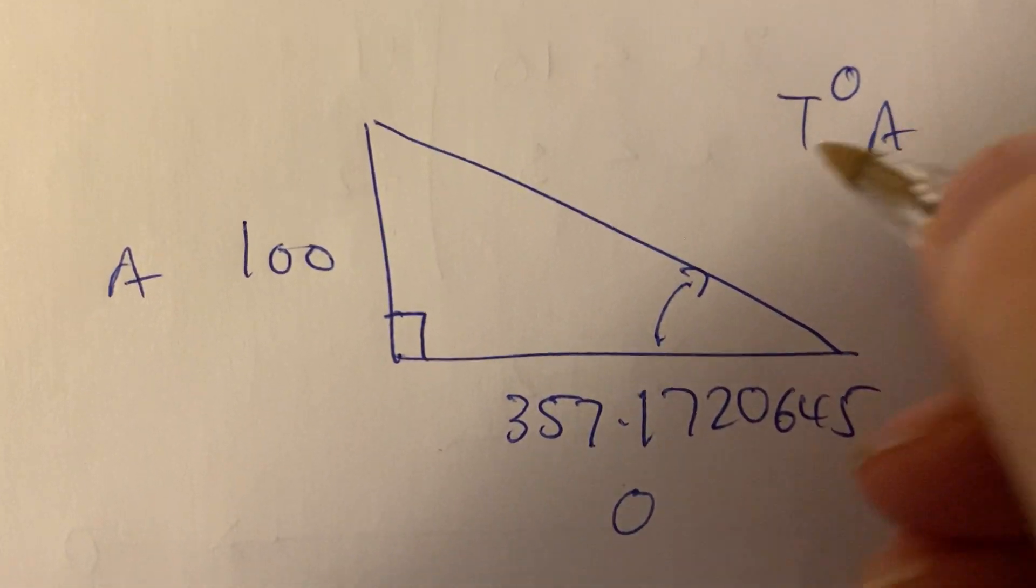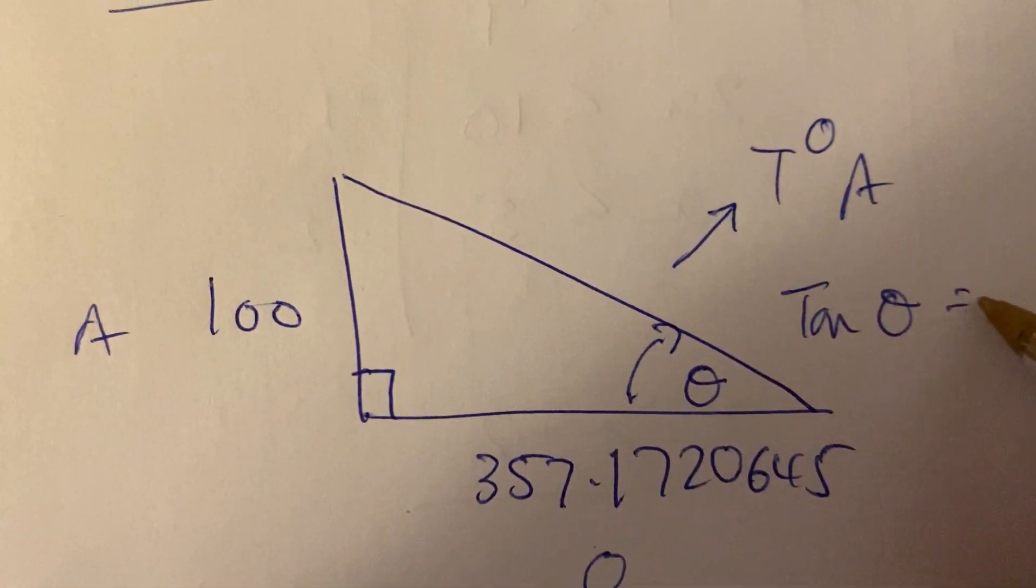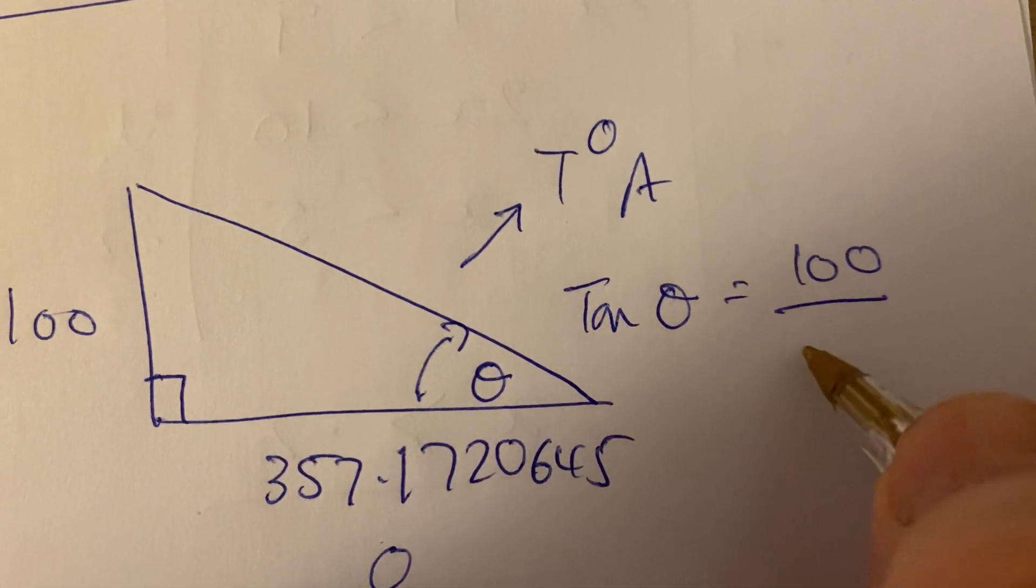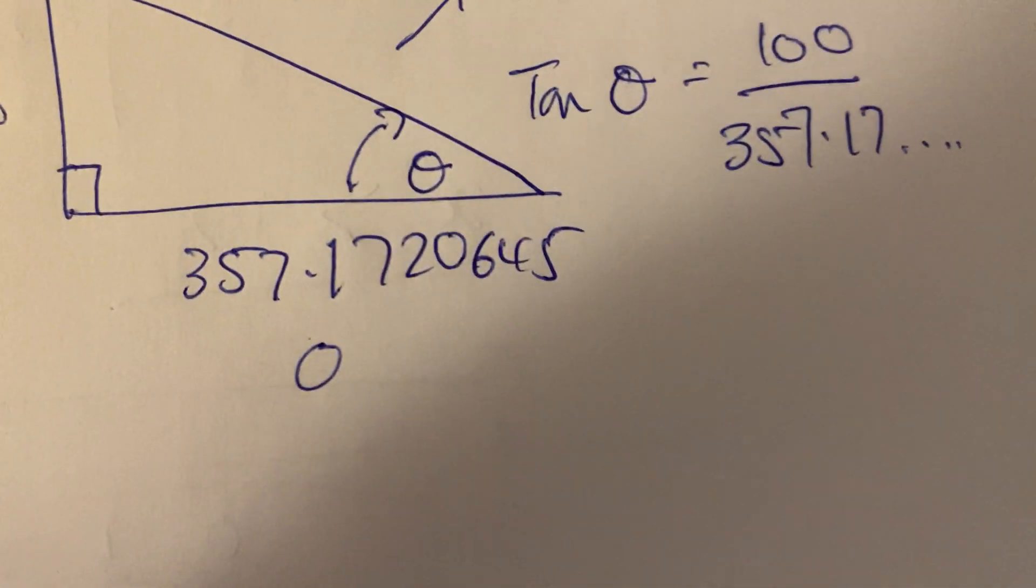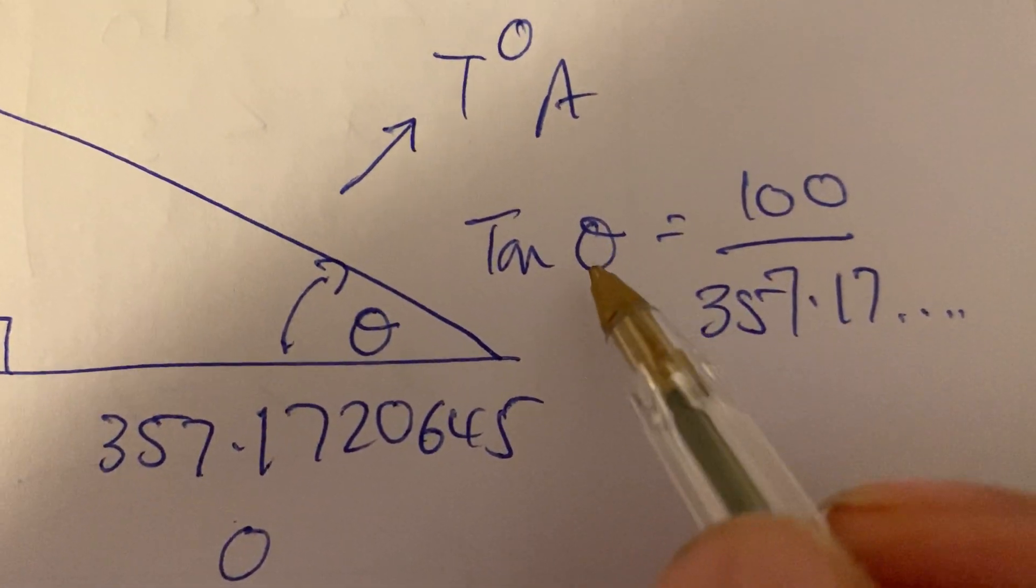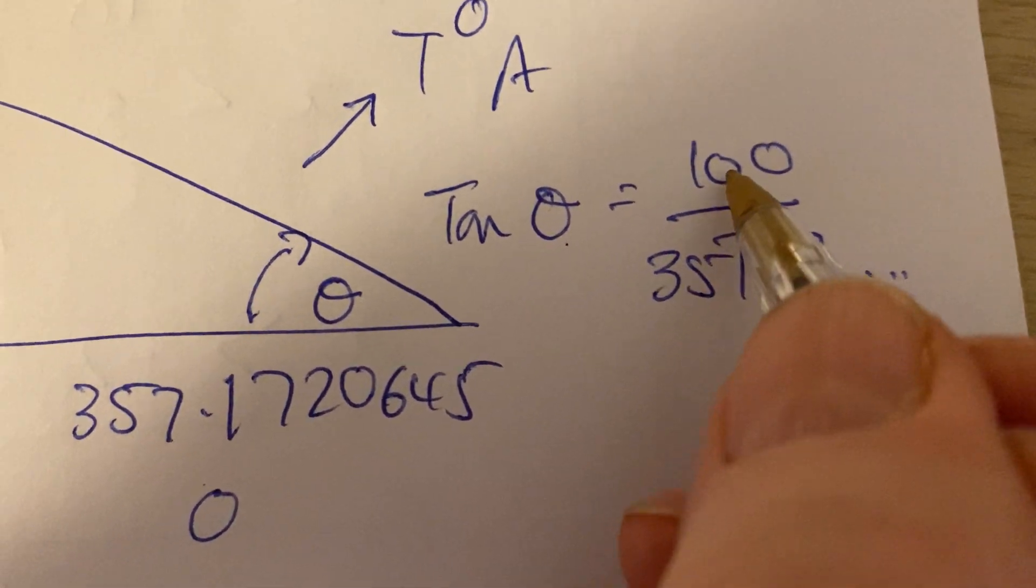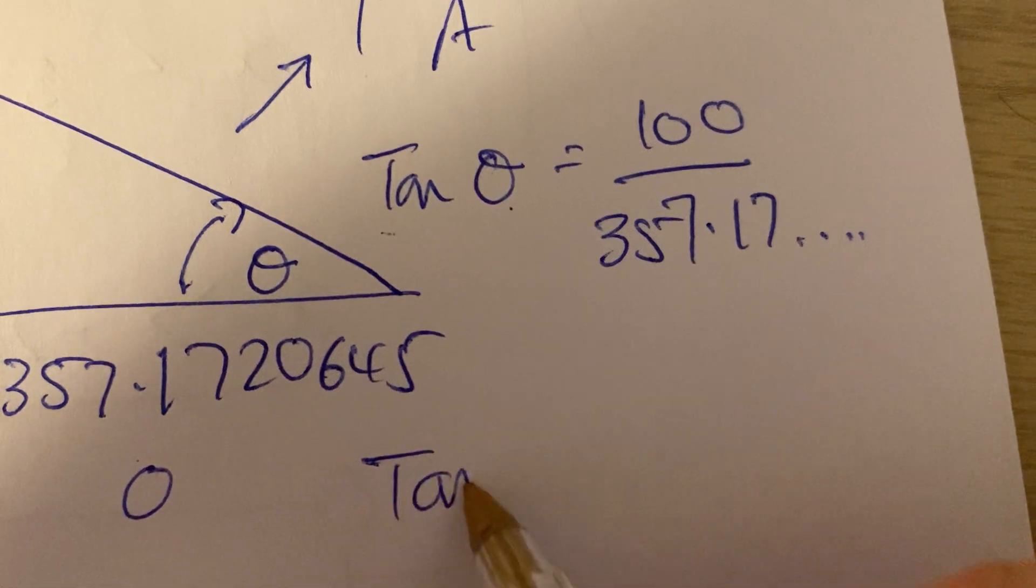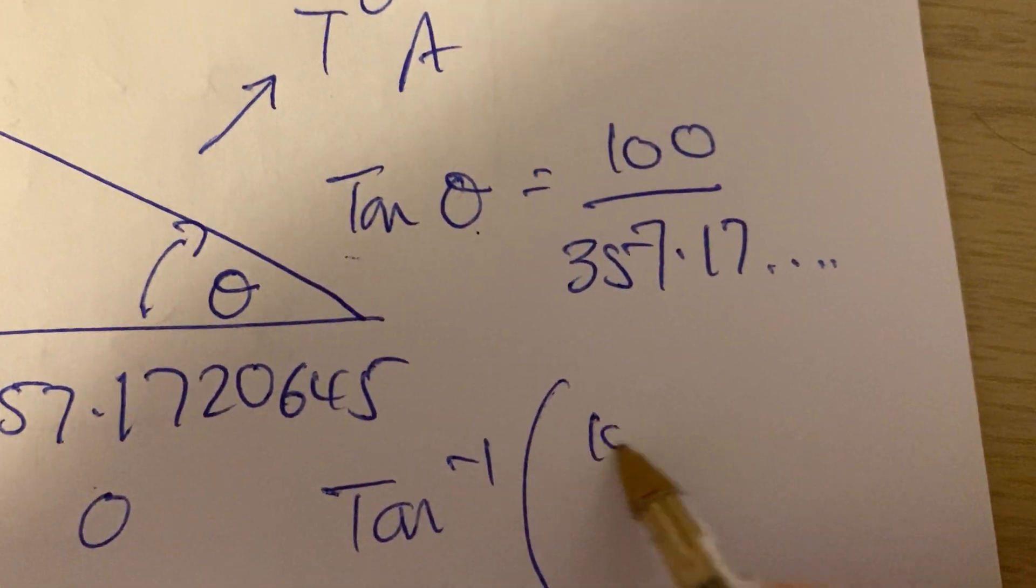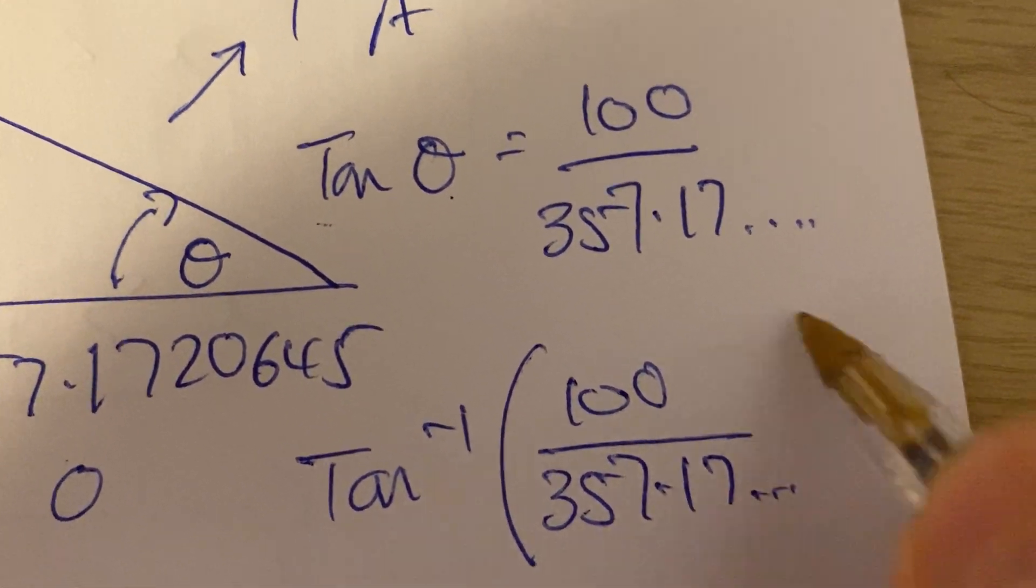It's opposite and adjacent, so it's TOA. But this time I want the angle. So tan of the unknown, let's call it theta. Tan θ equals opposite, which is 100, all over the adjacent, 357.17... That gives me the tan of it. I want theta on its own, so I need to get rid of tan by doing tan⁻¹ of whatever this comes out as. That's important, the way I've done it like this. Watch.